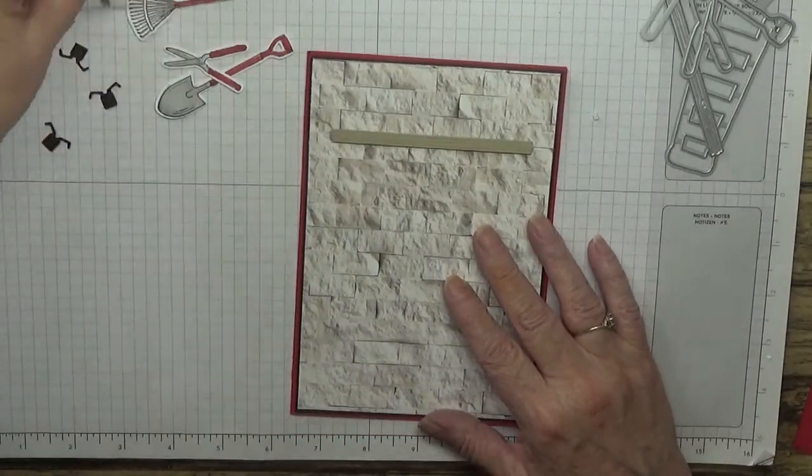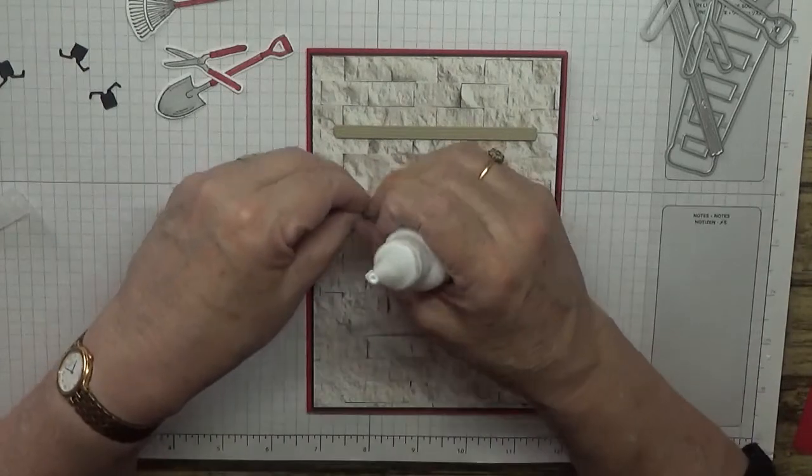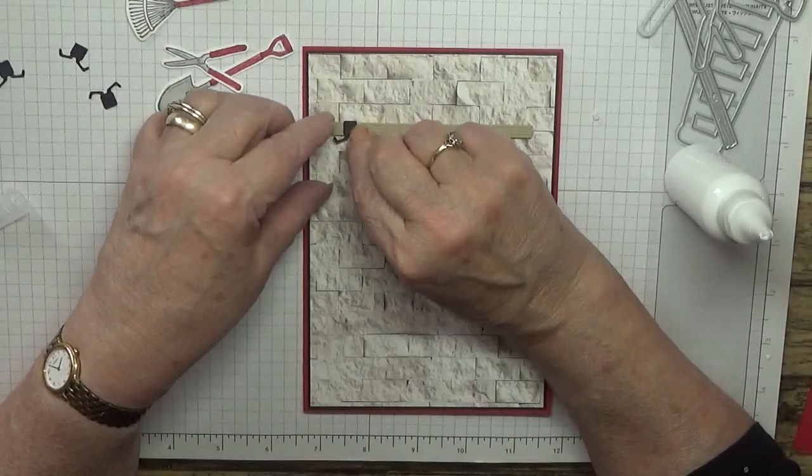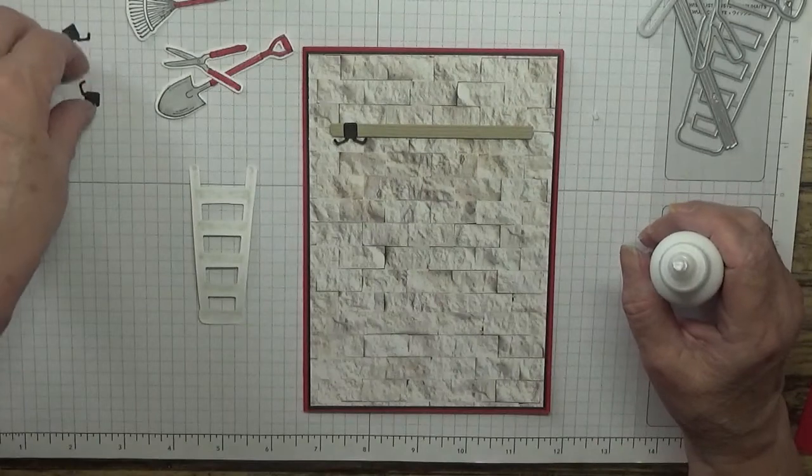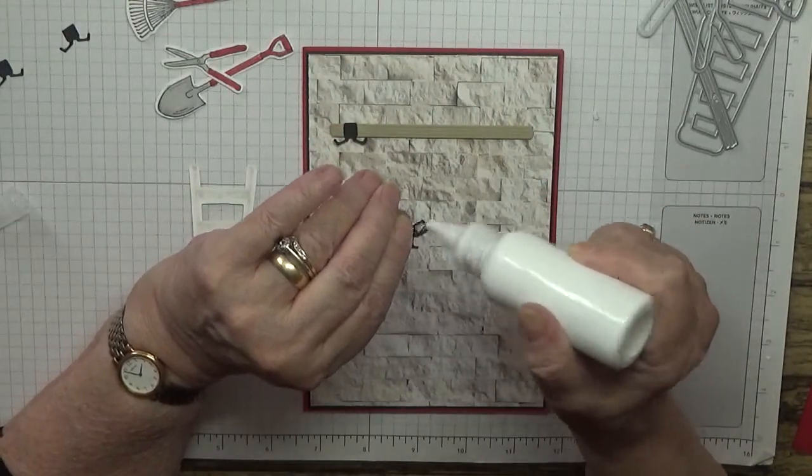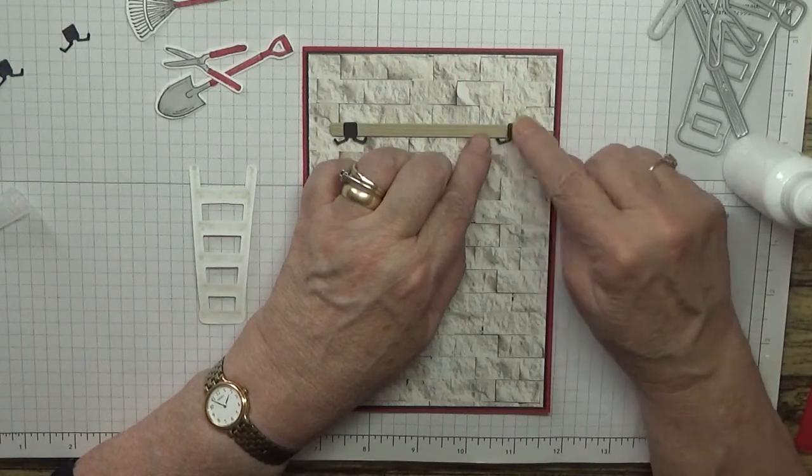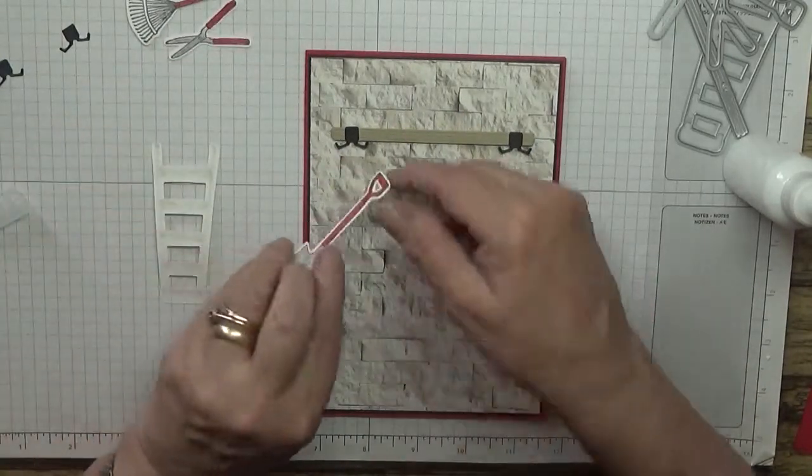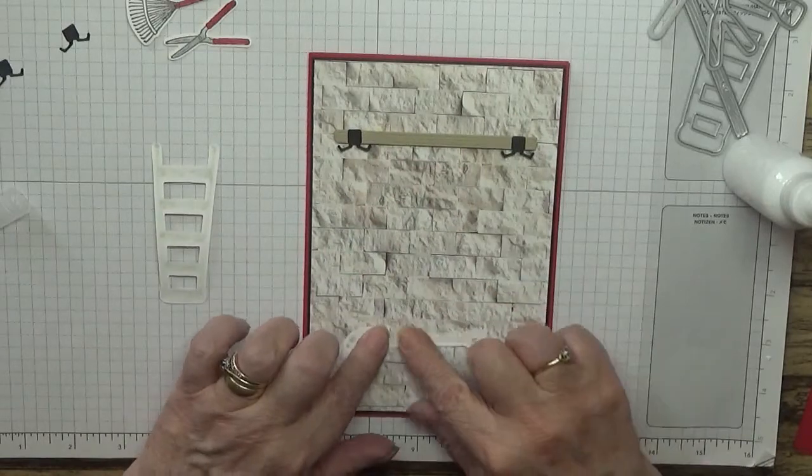I've got to glue these little black hanging pieces on. I'm gluing the square bit onto the plank of wood. This one goes at this end, and I'll glue the other two on when I place the tools. The tools will go on dimensionals.